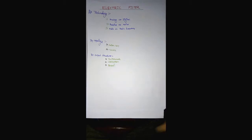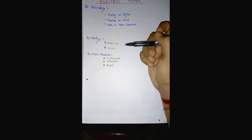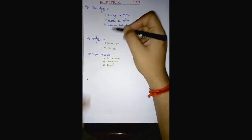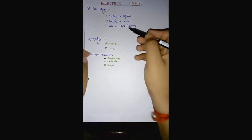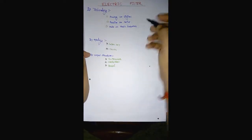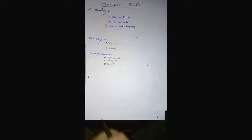RC filters are used for audio frequency and LC filters are used for radio frequency. Since the LC tank circuit has a higher Q value, it is more compatible, but it is very costly. Also, since the inductor has a magnetic effect, we usually use the RC filter.